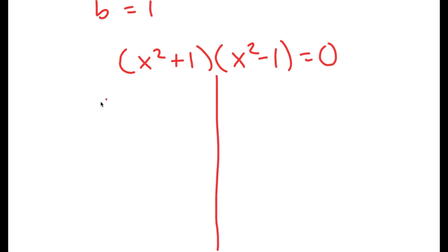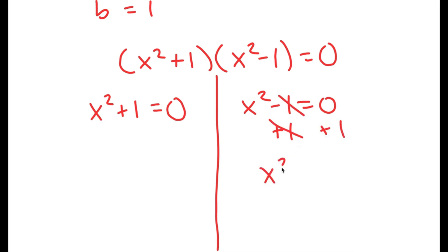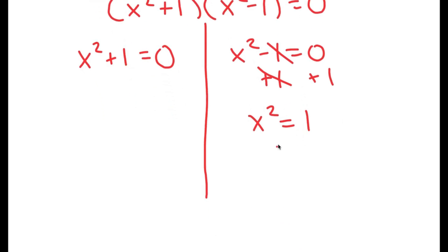This gives me two equations: x squared plus 1 equals 0, and x squared minus 1 equals 0. Solving x squared minus 1 equals 0 first — I add 1 on both sides to get x squared equals 1, then take the square root on both sides, giving x equals positive or negative 1.